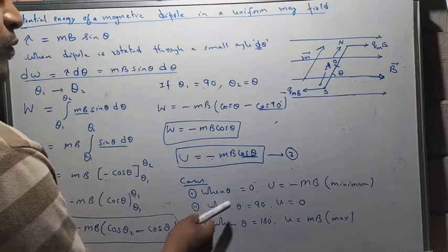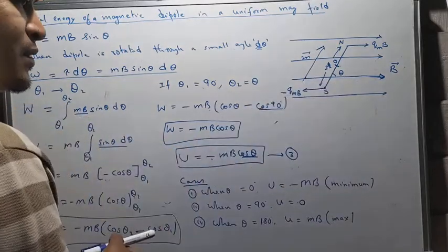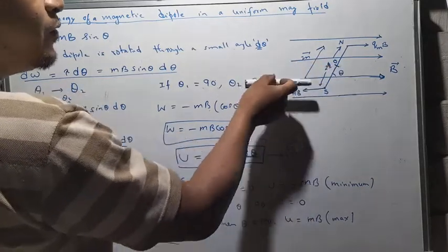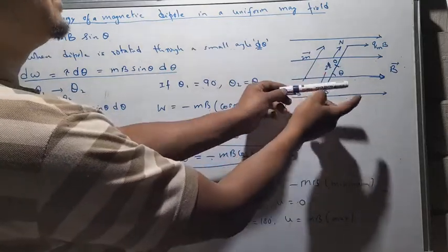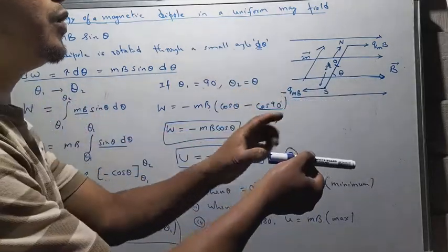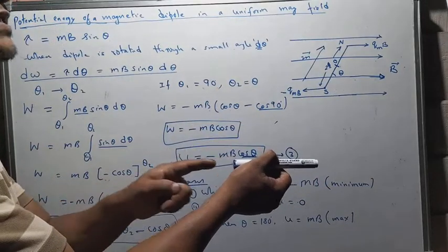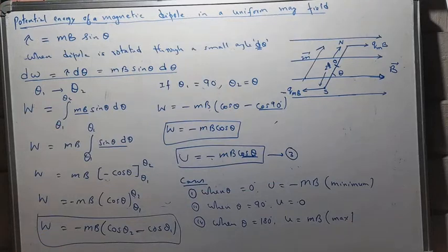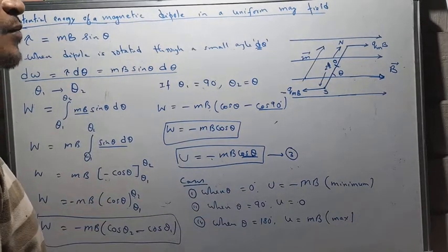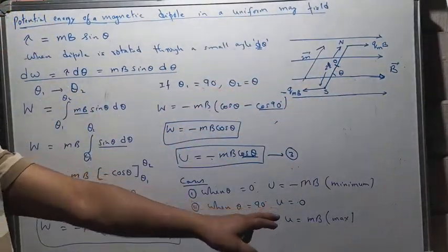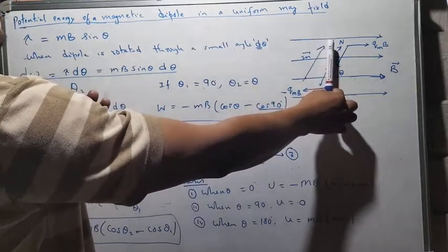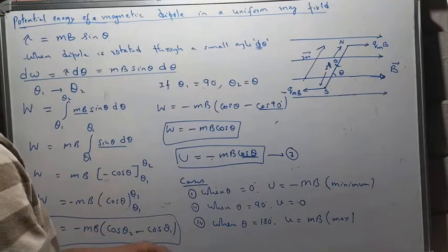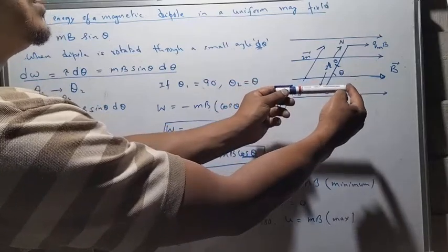We can conclude that when the magnetic dipole is placed parallel to the magnetic field (θ = 0°), it has minimum potential energy, meaning the dipole is in a stable equilibrium position. When the dipole is perpendicular to the magnetic field (θ = 90°), the potential energy U = 0, so the dipole possesses no potential energy at that orientation.